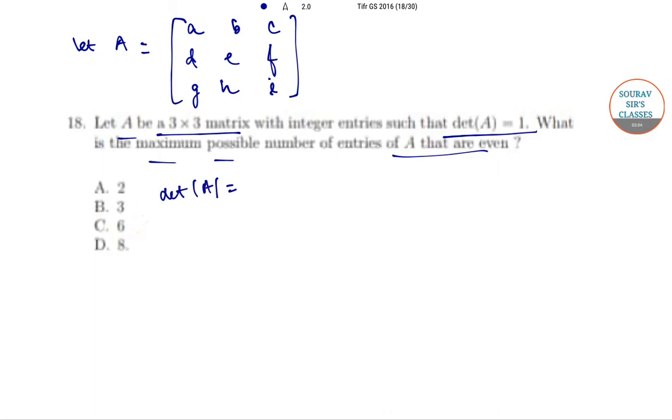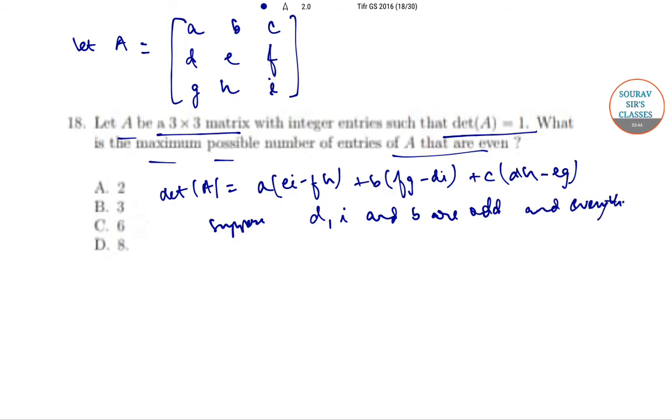Then det(A) = a(ei - fh) + b(fg - di) + c(dh - eg). Now suppose D, I, and B are odd, and everything else is even. Then determinant is odd.